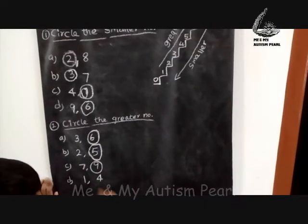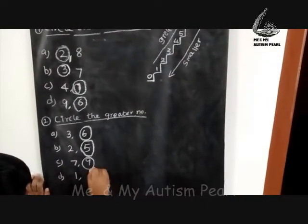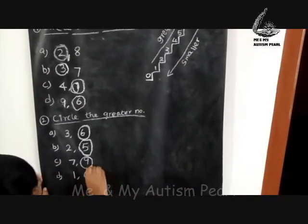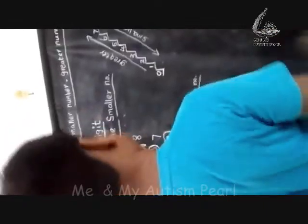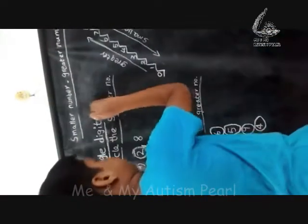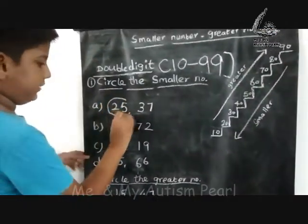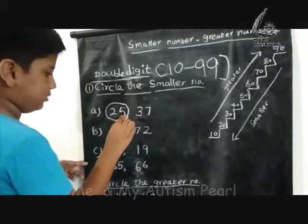Ok, last one: 1 and 4. Because 1 is down and 4 is up. Can you start — 25 is the smallest number. Why? Because it has only 2 tens.